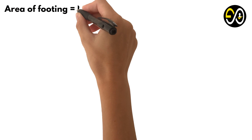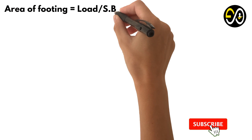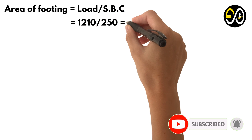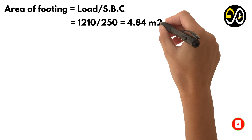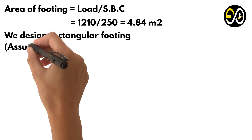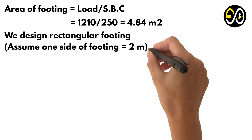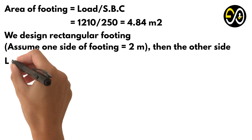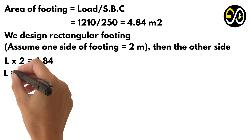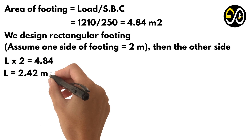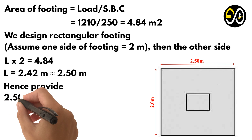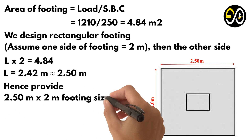Area of footing equals load over safe bearing capacity, equals 1,210 over 250, equals 4.84 square meters. We design rectangular footing; assume one side of footing equals 2 meters, then the other side: L times 2 equals 4.84, so L equals 2.42 meters, approximately 2.50 meters. Hence provide 2.50 meters by 2 meters footing size.